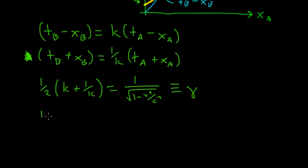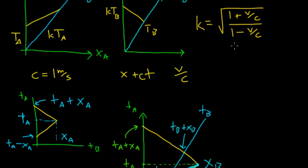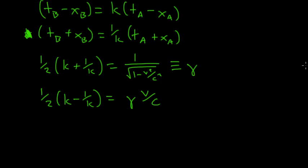If I take one half K minus one over K, that's going to be equal to gamma times V over C. I encourage you to take this equation for K and test this out. It's a little bit of messy algebra, but it's definitely doable at a high school level.